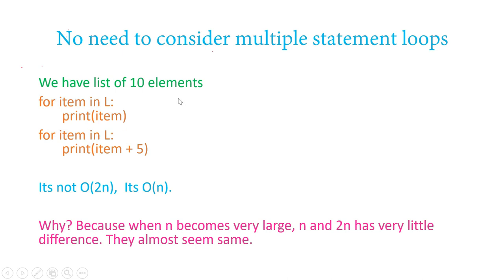You might think: first loop is O(N), second loop is also O(N), so add them to get O(2N). No — just say it is Big O of N. There is no need to multiply by a constant. When N becomes very large, the difference between N and 2N hardly matters. They almost seem the same. We just need to know whether it is linear or quadratic — and this is linear. So no need to multiply by some constant; just say Big O of N.